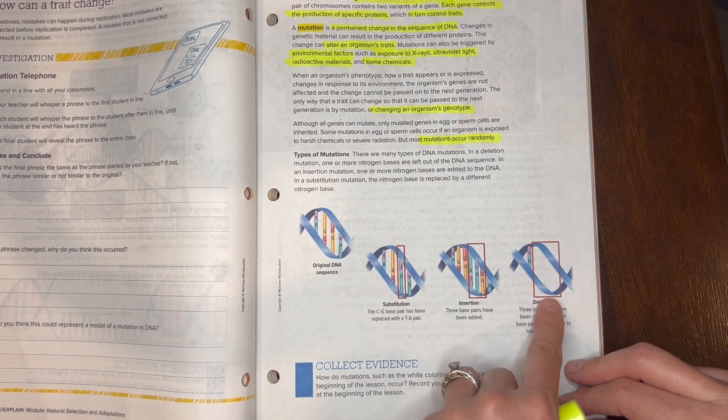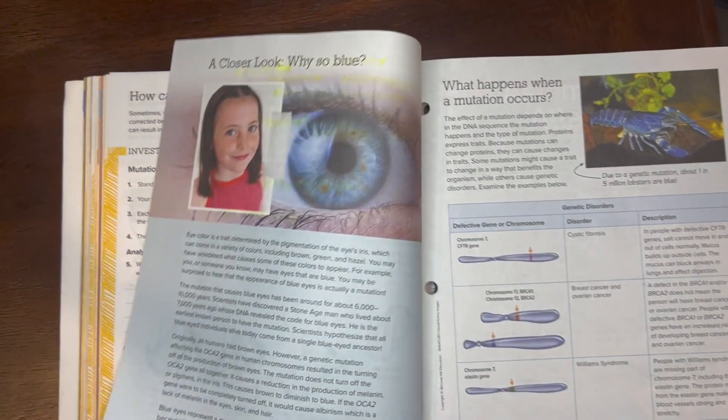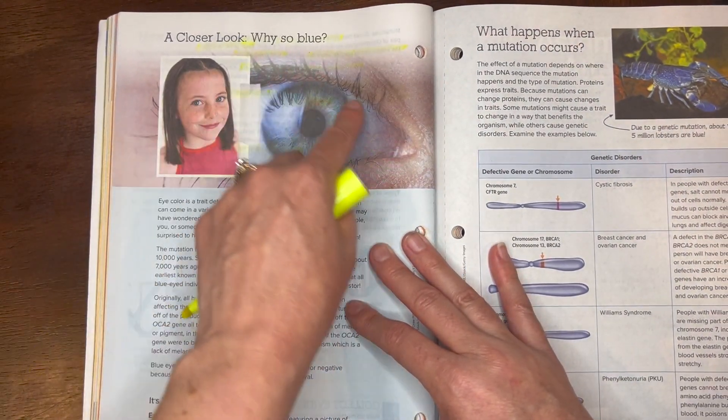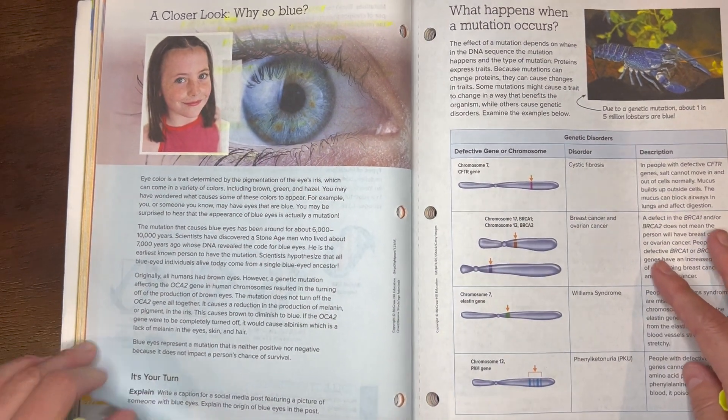So it's important to know that there are different types of mutations in the DNA while making copies. Go ahead and read about blue eyes and how blue eyes is actually a mutation. We want to go ahead and read through that and answer the questions in your notes.